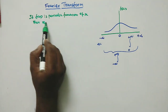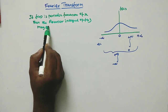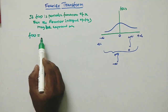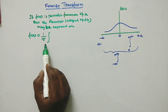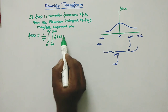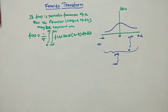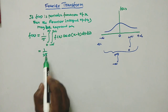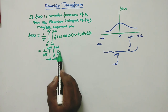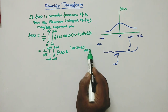Then the Fourier integral of f of x may be expressed as: f of x equals 1 by π, with the limit 0 to infinity and minus infinity to plus infinity, of f of t times e to the power i·ω·(x minus t), dt dω.